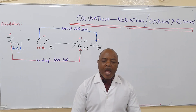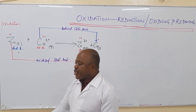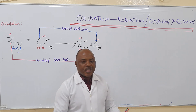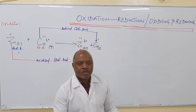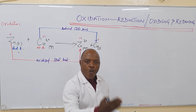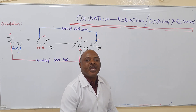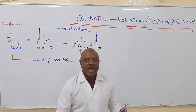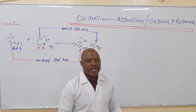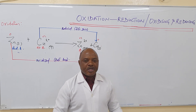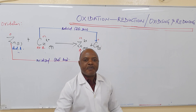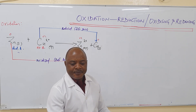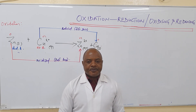Once more: an oxidizing agent is a species that oxidizes another one and itself is being reduced. A reducing agent is a species that reduces another one and itself is being oxidized. That is how you can define oxidizing agent and reducing agent. Thank you.